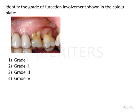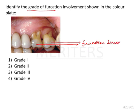The question is: identify the grade of furcation involvement shown in the color plate. In the color plate we have two molars, one and two, and both of them have furcation involvement as we can see.